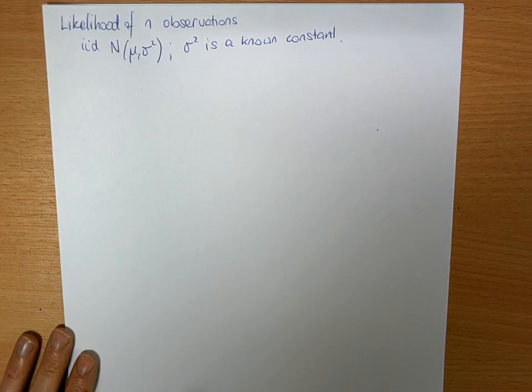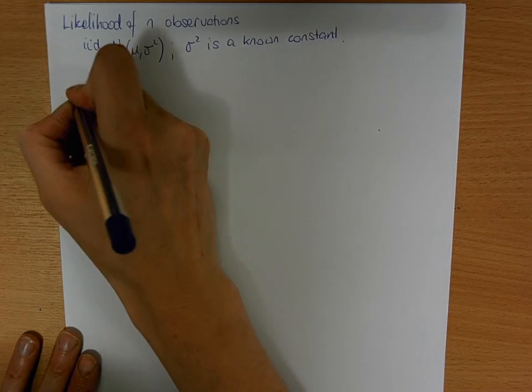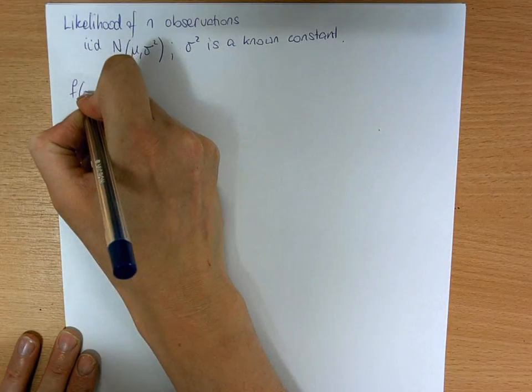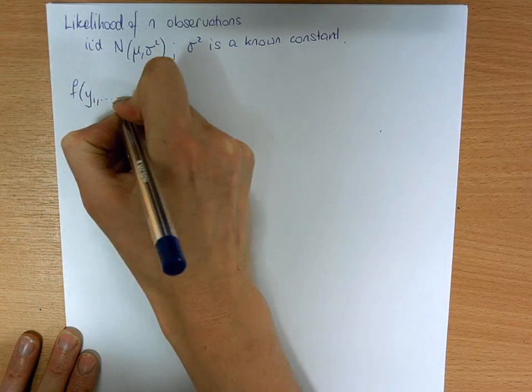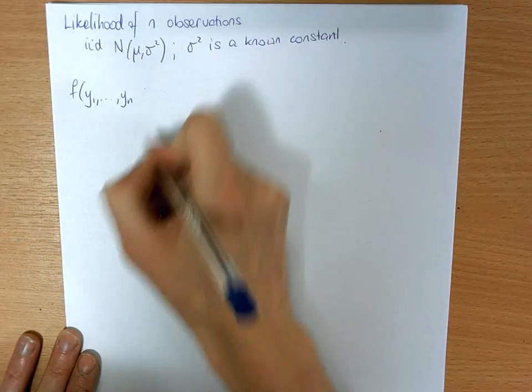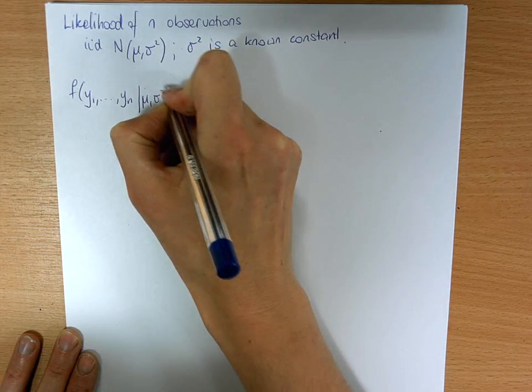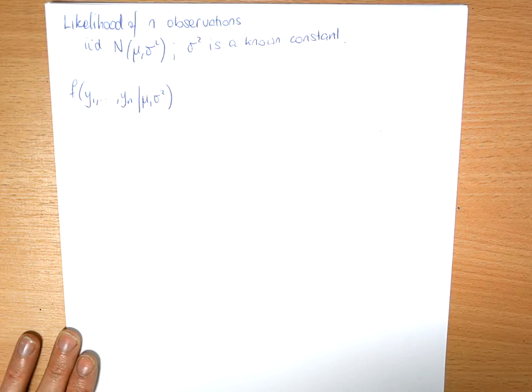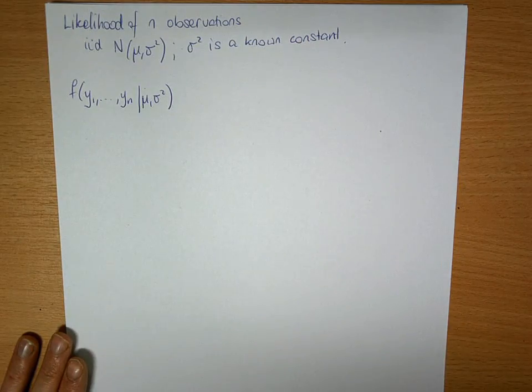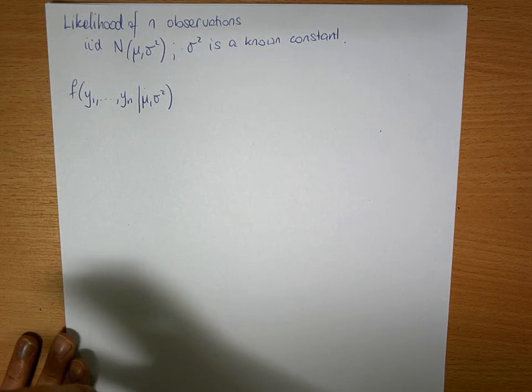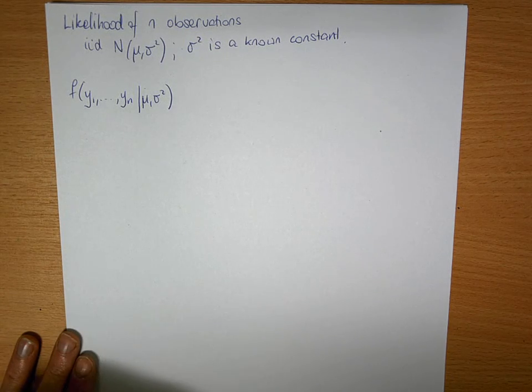Suppose we have f of y1 up to yn given mu sigma squared. Here we're talking about they're IID, so independent, identically distributed.